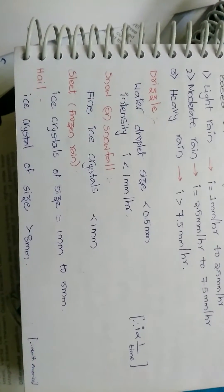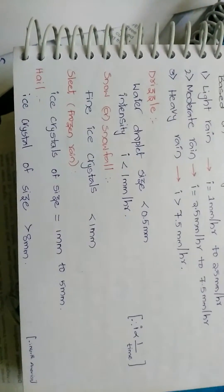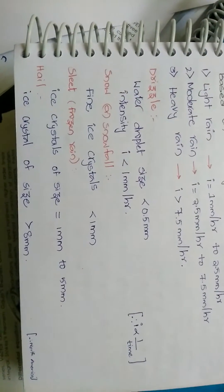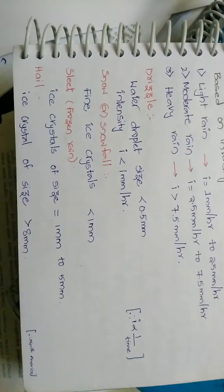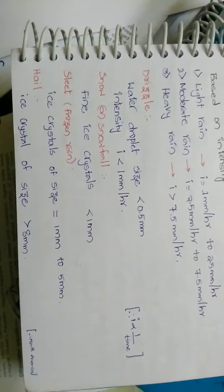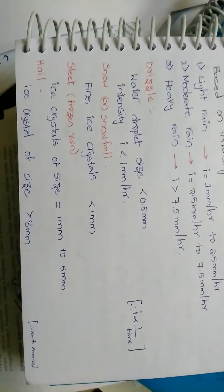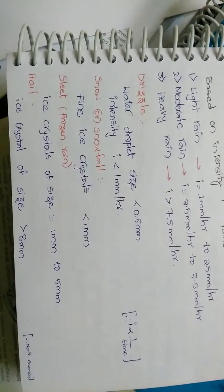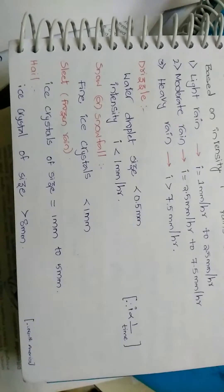Snow or snowfall: fine ice crystals less than 1 mm. Silt: frozen rain, ice crystals of size equal to 1 mm to 5 mm.